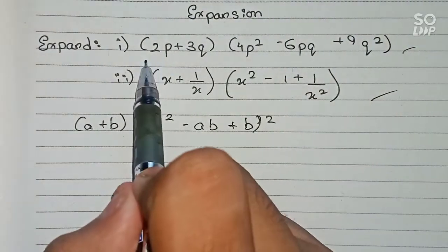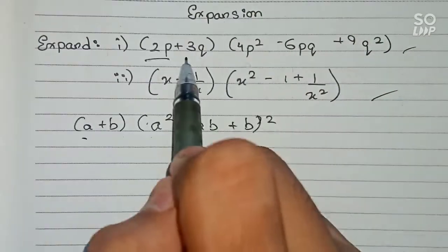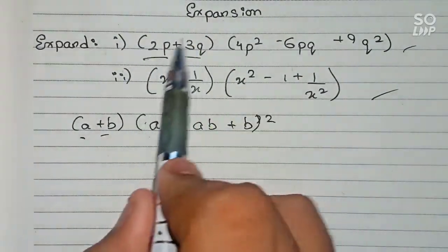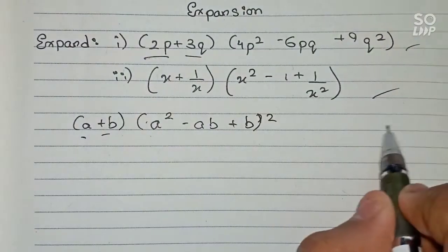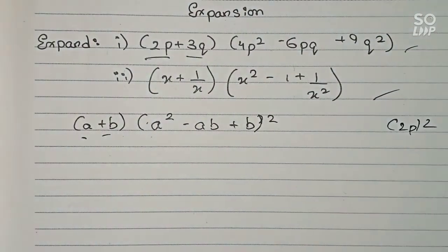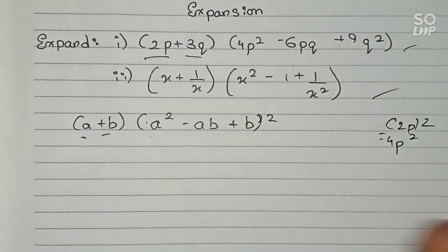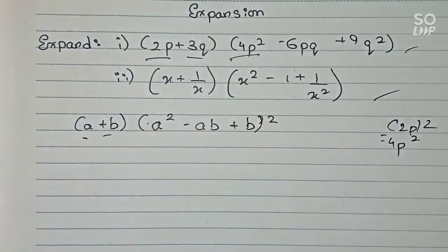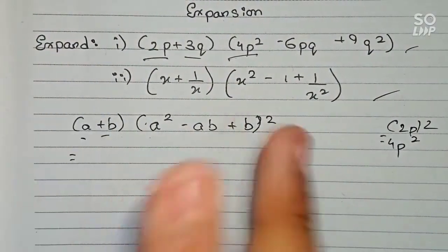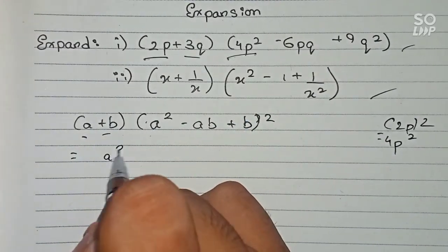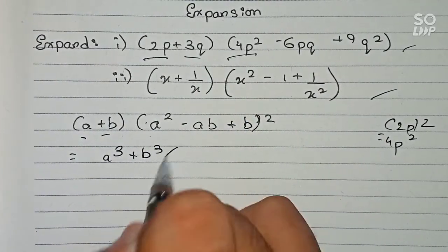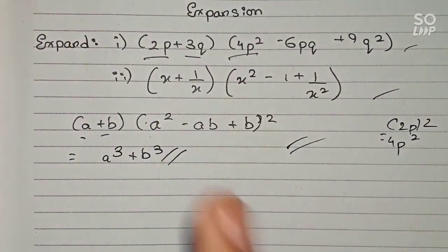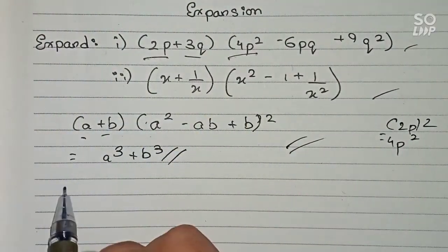In the first question, 2p will be 'a' and 3q will be 'b'. We can verify that (2p)² equals 4p², which matches the formula. That means it is in the full formula, and the answer for this identity is a³ + b³. Now according to this we put down the values of both questions.